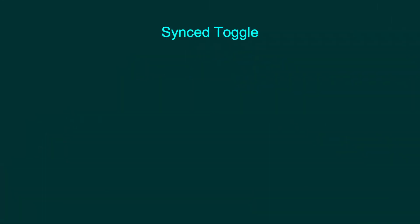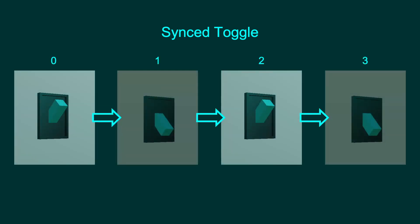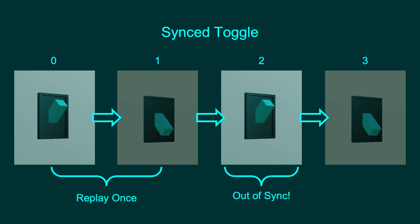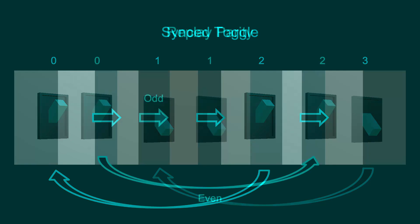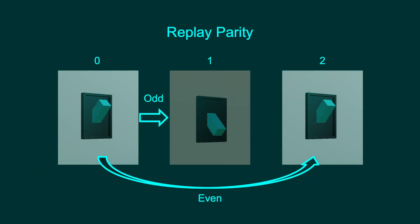The next example will show how to sync objects that are toggled multiple times. When using a toggle action, it modifies the previous state to get to the new state, meaning it needs more information than replayOnce provides. When you toggle an object twice, it will be back to the original state. For toggles, we basically need to know if it happened an odd or even number of times. This is where replayParity comes in.